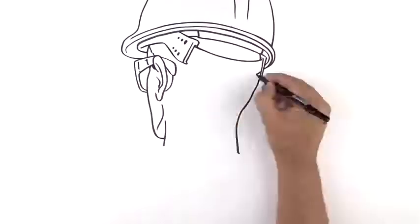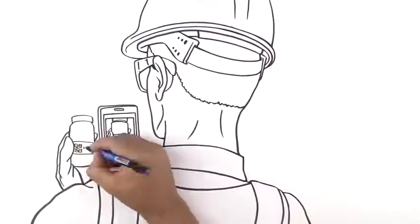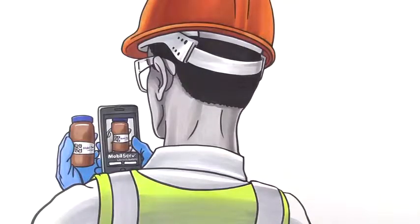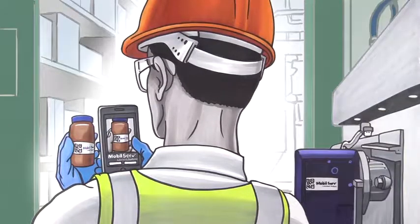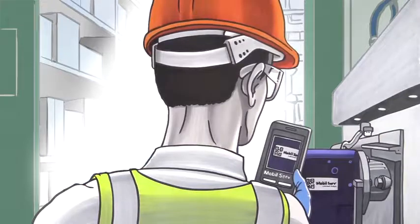With Scan&Go there's no hunting for equipment information, no printing labels, no filling out all the data by hand. You just scan the bottle and the equipment tag, document the details, and mail the sample. Done.